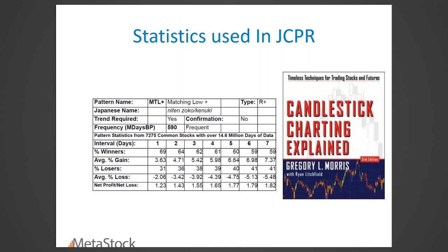That's why I don't use candlesticks for anything other than daily data. If you used them for intraday data — say a 15-minute candlestick — the open would just be the next tick, which is not much time to make a decision. With opening price more readily available, when I did the third edition in 2005, I took all common stocks from NASDAQ, NYSE, and AMEX — 7,275 common stocks accounting for 14.6 million days of data — and that's what I ran the statistics on. Just common stocks, no closed-end funds or ETFs.